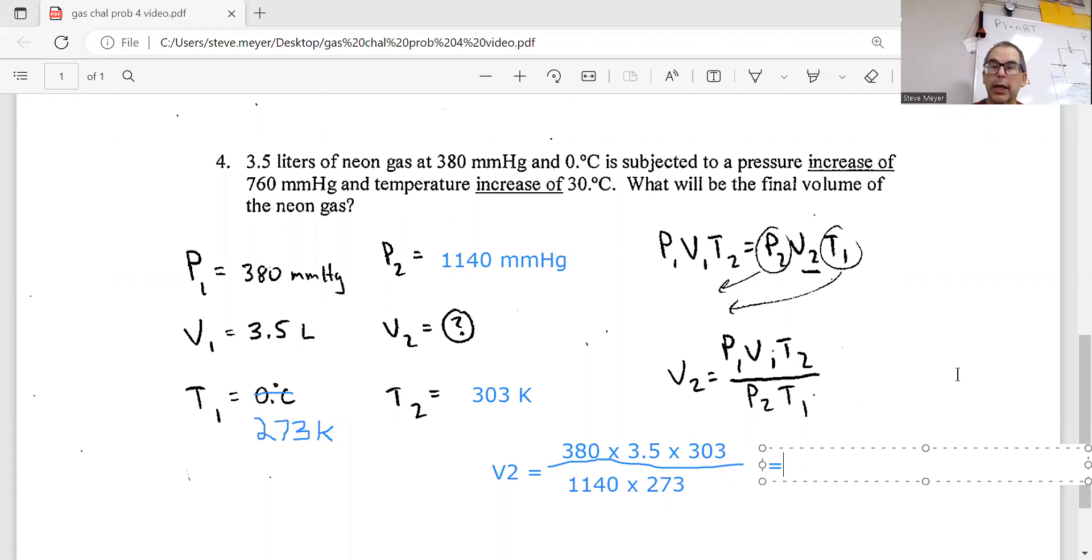Oops, I'm going to sign right there, but the 1140 would be the P2, and the 273 would be the T1, and we get, now just one thing when I do this on my calculator, I can multiply the top three. Now I have to divide by the last two, or I can put parentheses around this in the denominator when I do it, and then I should get an answer of 1.3 liters.